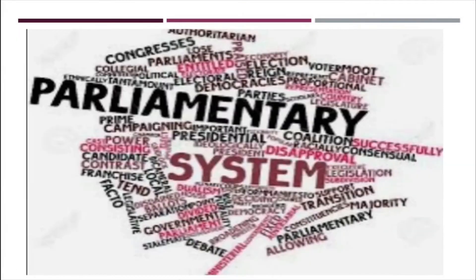Now let's study about the Parliamentary System of Government. The Indian Constitution has provided for a Parliamentary System of Government. In such a system, the Parliament — that is the legislature — has the highest decision-making power. Indian Parliament includes the President, Lok Sabha or the House of the People, and Rajya Sabha, which is also called the Council of States. The Council of Ministers that runs the administration emerges from the Lok Sabha and is answerable to it for all its decisions. In a Parliamentary Democracy, the discussions and debates that take place in Parliament have great significance.